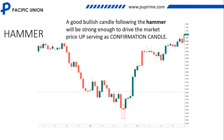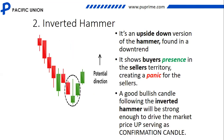Once the confirmation candle is bullish, you take a buy trade. Your entry will be at the close of that good bullish confirmation candle, and your stop loss will be below the hammer. At that particular point, it tells you that you are moving alongside the trend. That is how you trade the hammer.